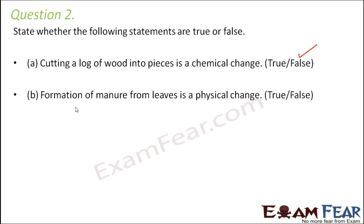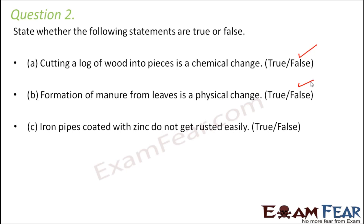Formation of manure from leaves is a physical change — false. To form manure, leaves and vegetable wastes are mixed together with water and allowed to rot completely. A lot of chemical changes take place during this process; new substances rich in organic matter are formed. So formation of manure is a chemical change, not a physical change.